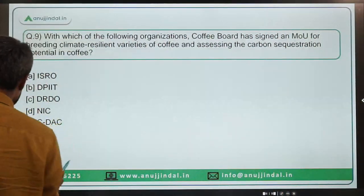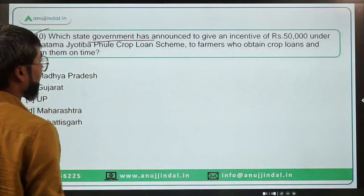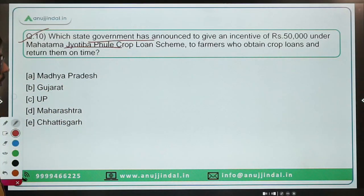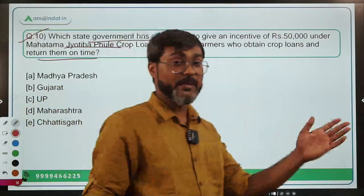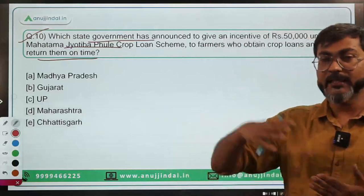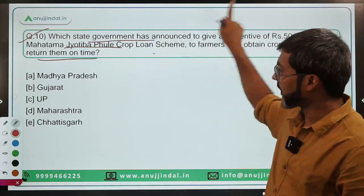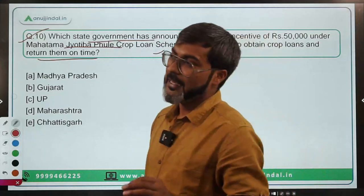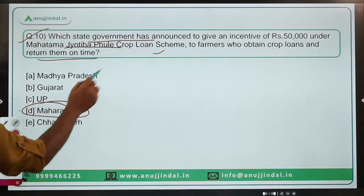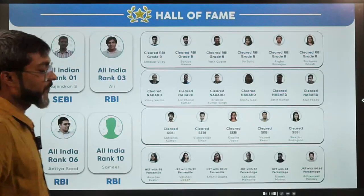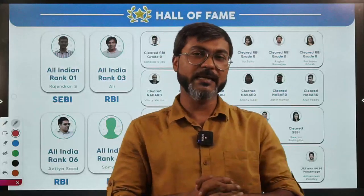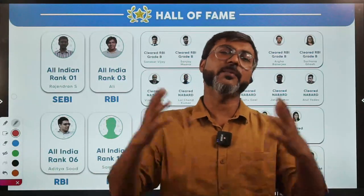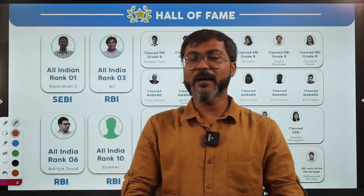Question ten: Which state government has announced an incentive of rupees 50,000 under the Mahatma Jyotiba Phule Crop Loan Scheme to farmers who obtain crop loans and return them on time? If any farmer in this state obtains a crop loan and repays it on time, the state government provides an incentive of rupees 50,000. The state in question is Maharashtra — Option D is the correct answer. That's it for today's session. If you have any doubts, ask in the comment section. See you tomorrow with a new government scheme!